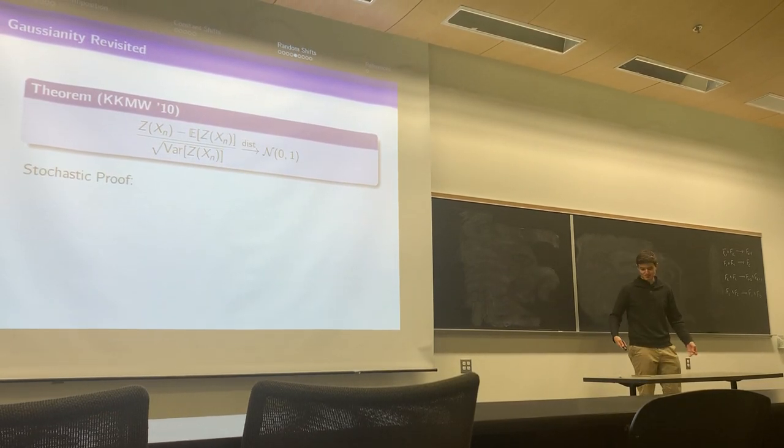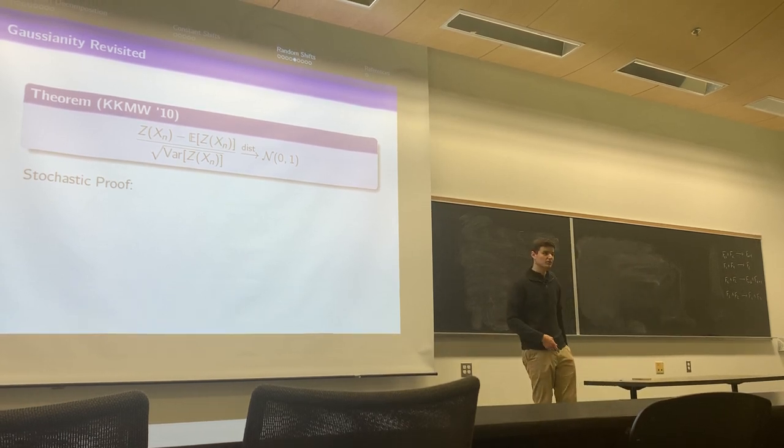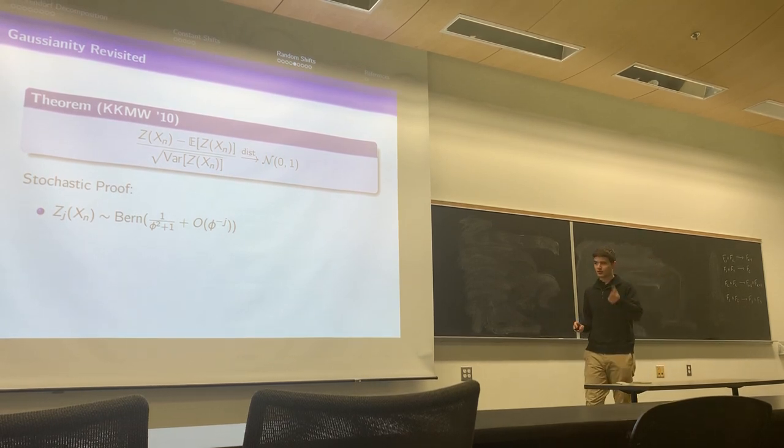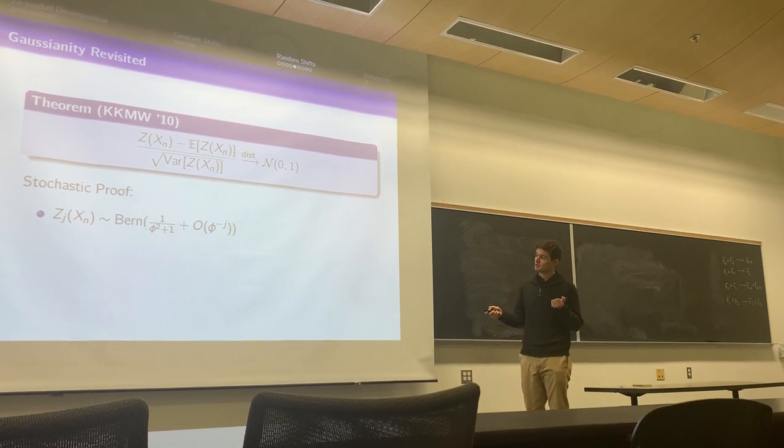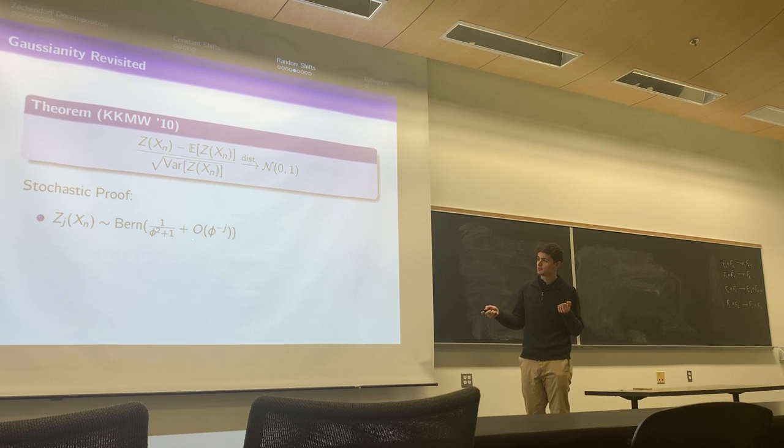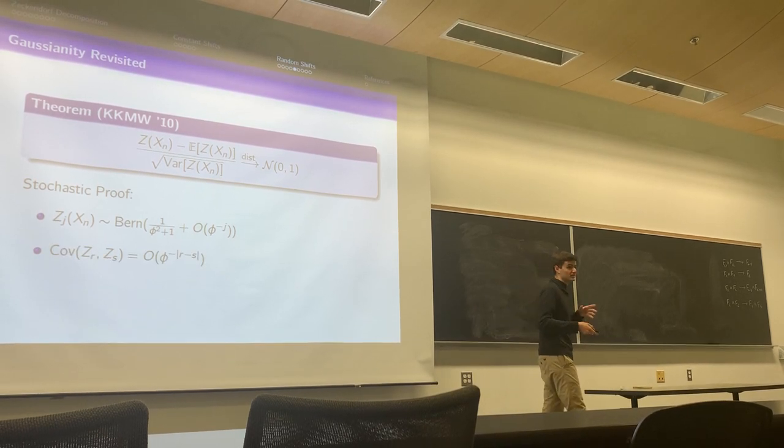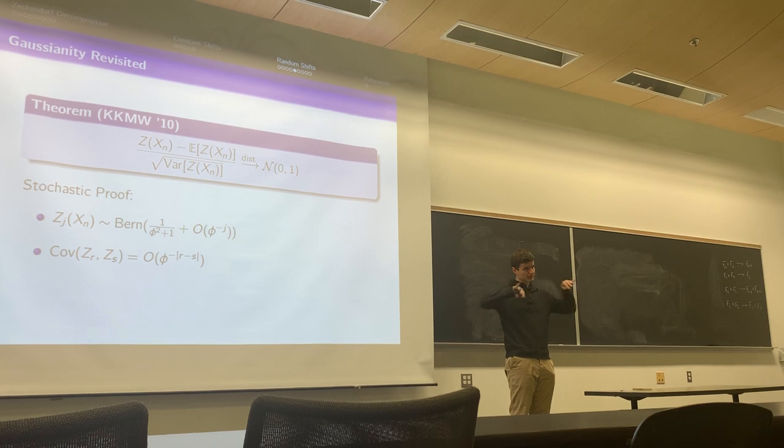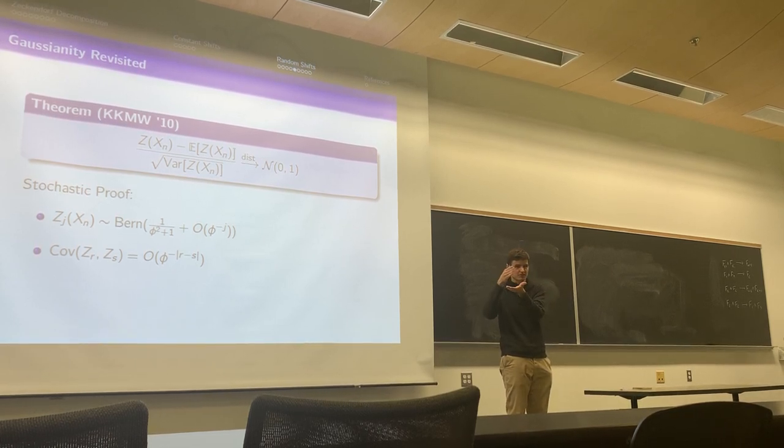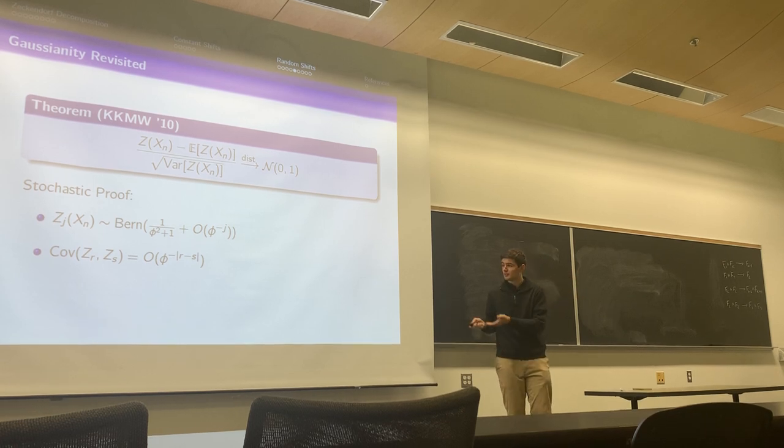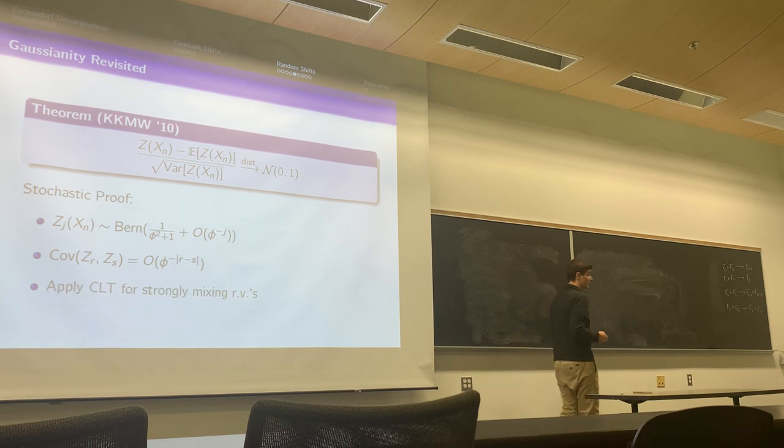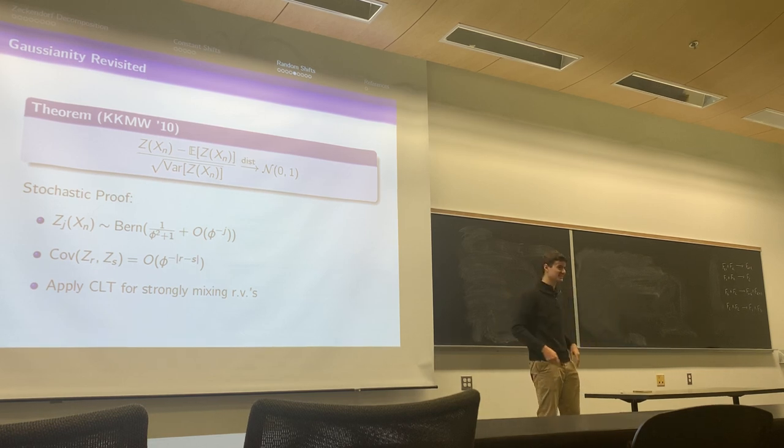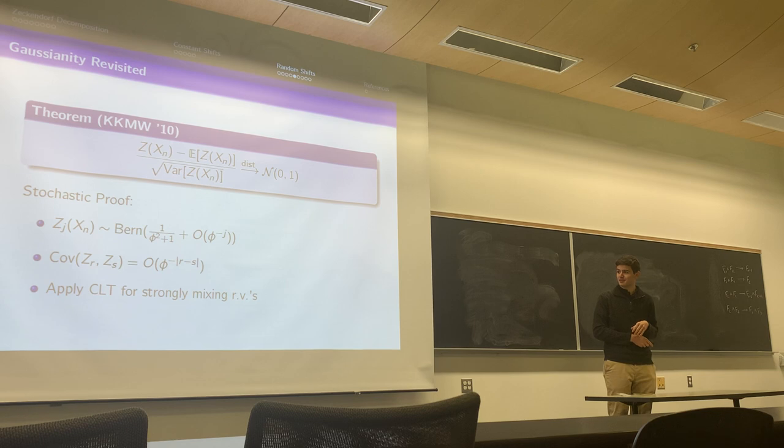So now our stochastic proof of what was done in 2010, where we're not going to use explicit binomial coefficients, is to think of each indicator random variable as a really random variable, kind of like a coin flip. Basically the probability that the j-th digit is one is roughly 1 over φ² plus one with some small error. Then the covariance among each one of these, if you consider the r-th digit and the s-th digit, and the digits are really far apart, you would expect that the covariance is extremely small. Then you can apply the central limit theorem for strongly mixing random variables, basically saying, yeah, covariance is pretty small for most things. We expect them to still have a central limit theorem, even though they're not independent.